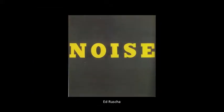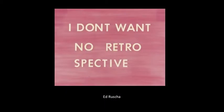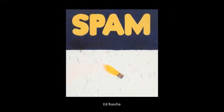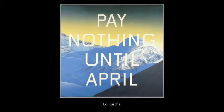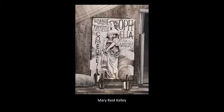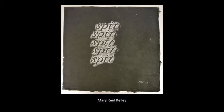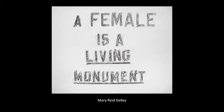Ed Ruscha began using words as a main component of his work in 1961. His paintings and drawings often present humorous phrases or non sequiturs that are contrasted with an image or painterly background. Sometimes considered a California pop artist, his work is often self-conscious about its use of artistic tradition while lampooning that tradition at the same time. Mary Reed Kelly uses image and text to address the reality of living as a woman in today's world, and the disconnect between that reality and an idealist fantasy of what life is supposed to be.